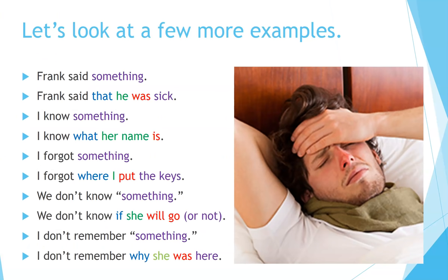Let's look at a few more examples. 'Frank said something.' 'Frank said that he was sick.' The extra word comes at the beginning — 'that' — followed by the subject, 'he,' and 'was' is the verb. 'Sick' completes the noun clause — in this case, it's just an adjective.